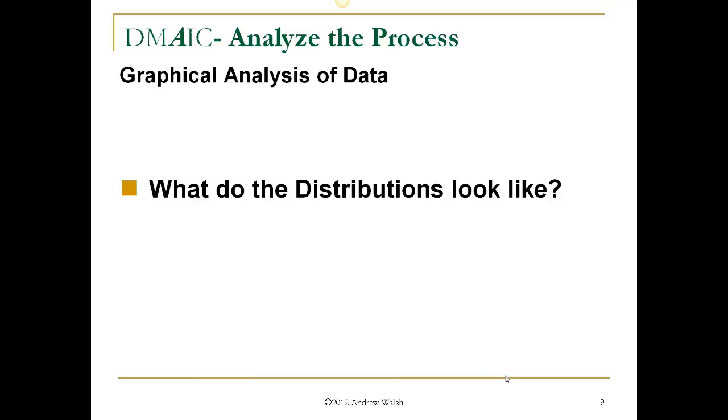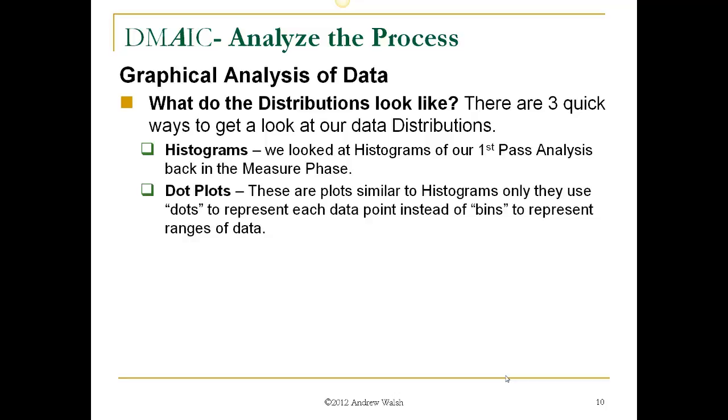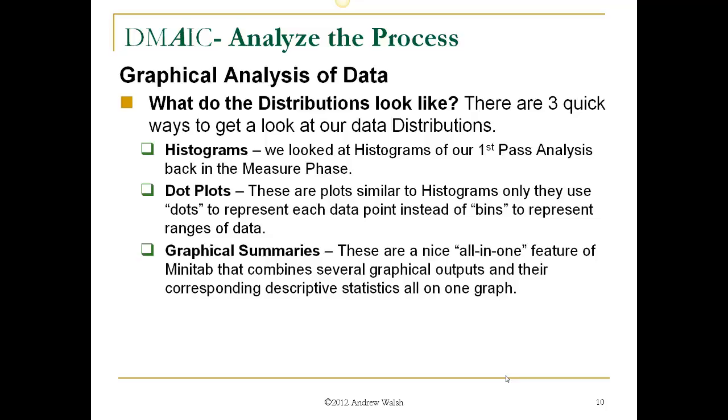So, we ask the questions, what do distributions look like? There are three quick ways to get a look at our data distributions. First is a histogram. And we looked at histograms of our first pass analysis back in the measure phase. We also have the dot plots. These are plots very similar to histograms, only they use dots to represent each data point instead of bins to represent ranges of data. And then the graphical summaries. These are a nice all-in-one feature of Minitab that combines several graphical outputs and their corresponding descriptive statistics all on one graph.